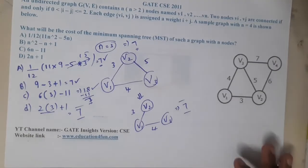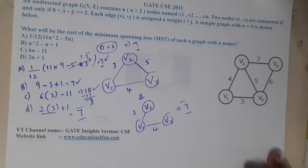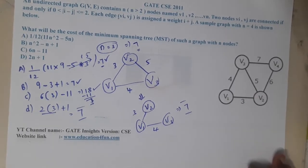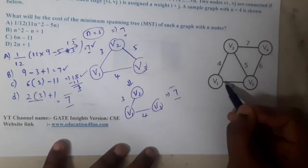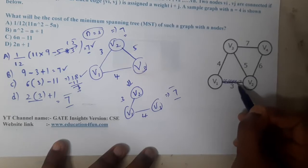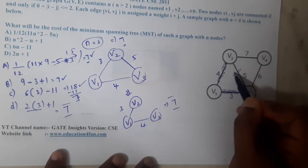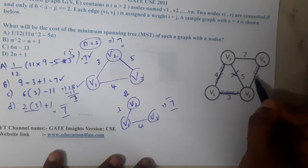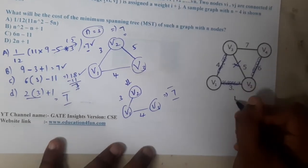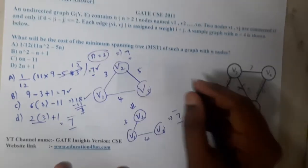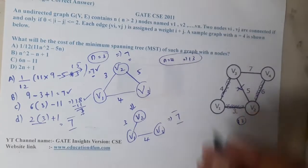Let us now try n equal to 4. We take the minimum edge first, which has cost 3. Then we take the next minimum value — we cannot take one edge as it forms a loop — so we take cost 4, then cost 6. The total MST cost for n equal to 4 is 13.